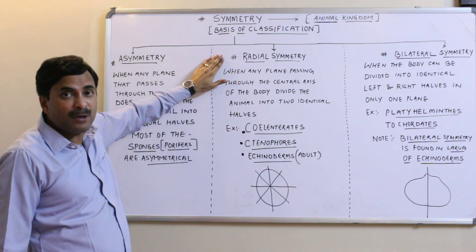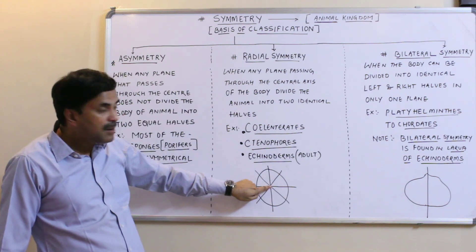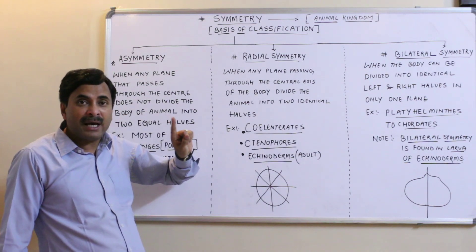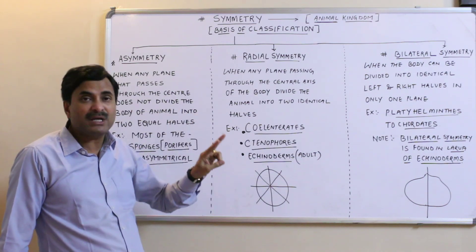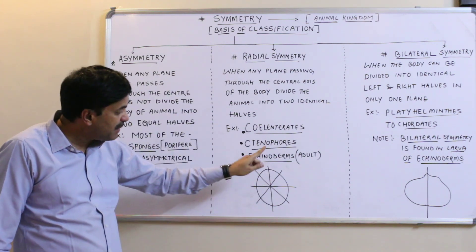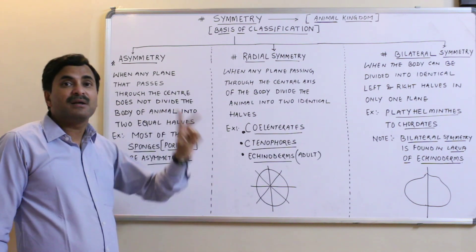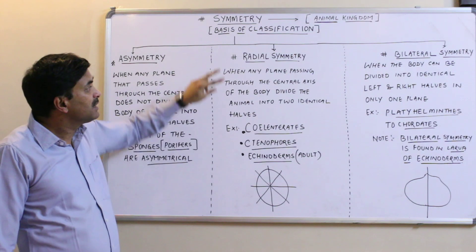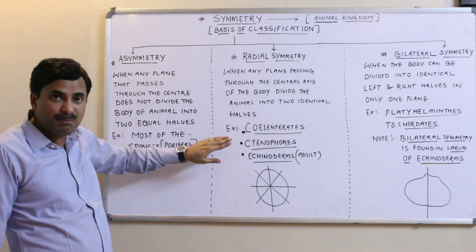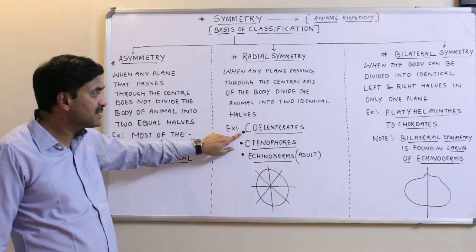Now coming to the second type of symmetry known as radial symmetry. When any plane passing through the central axis of the body divides the animal into two equal halves, then such type of symmetry is called radial symmetry.